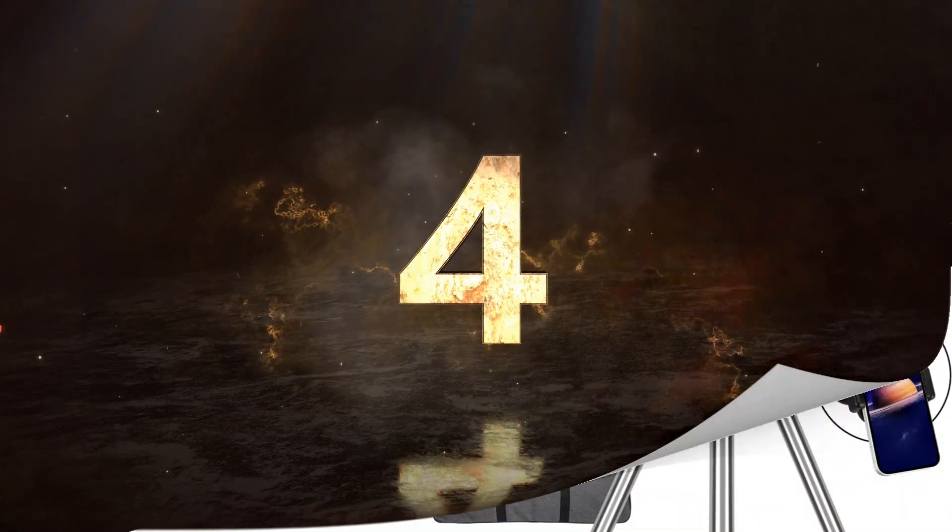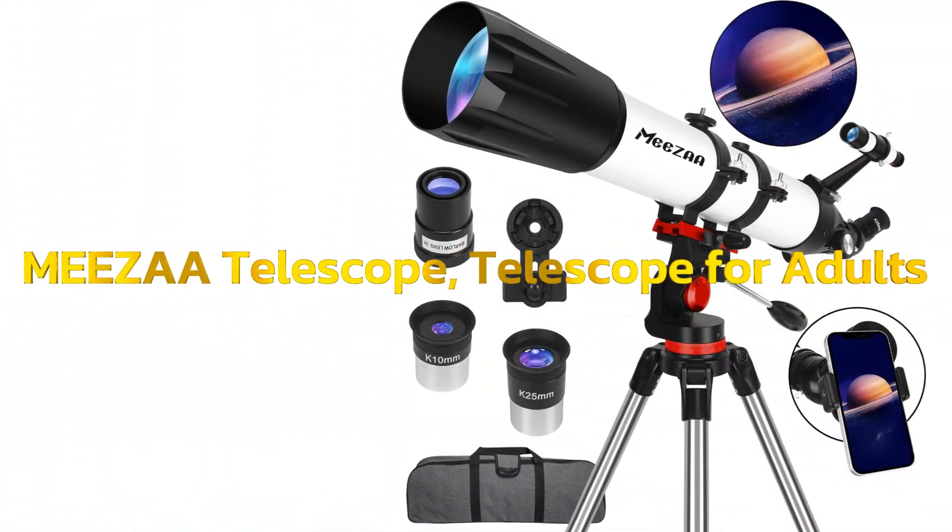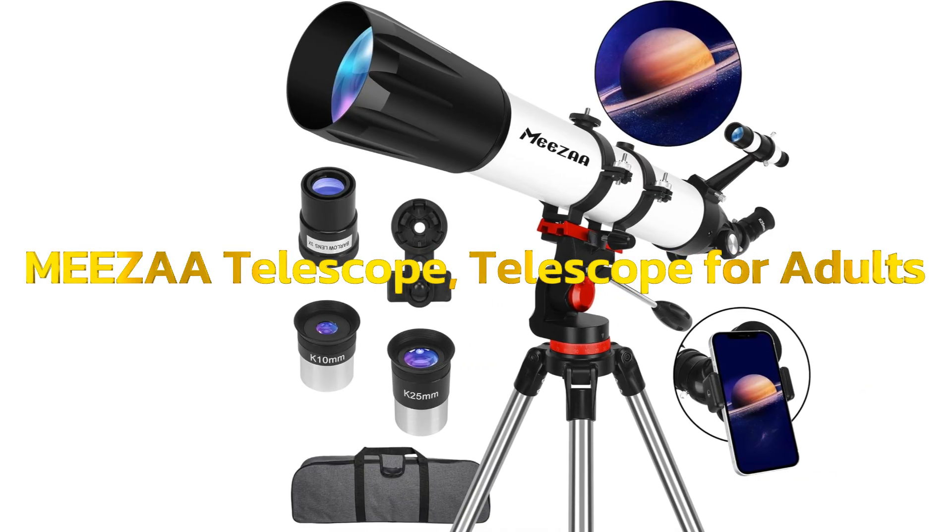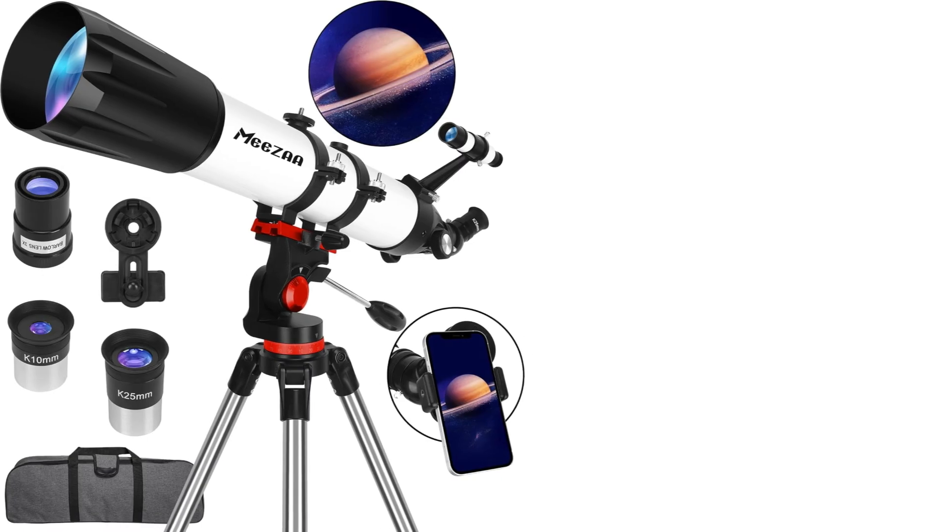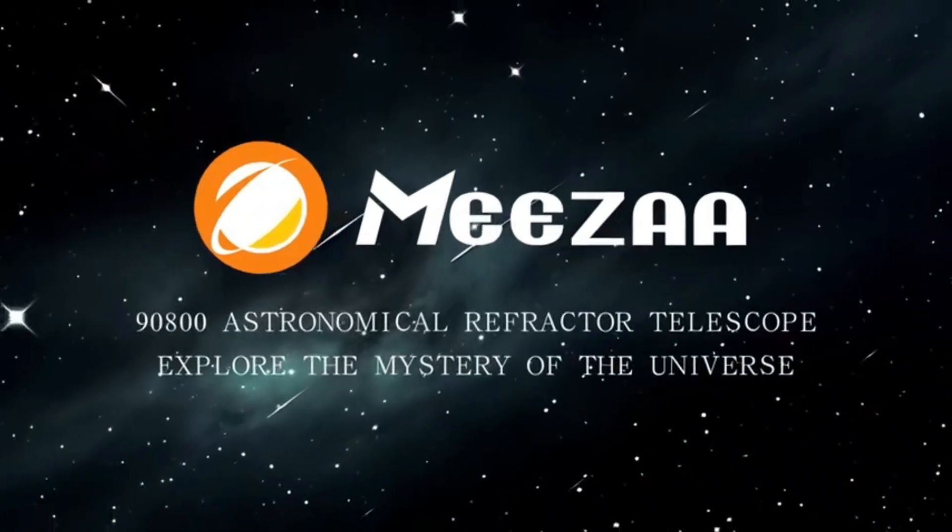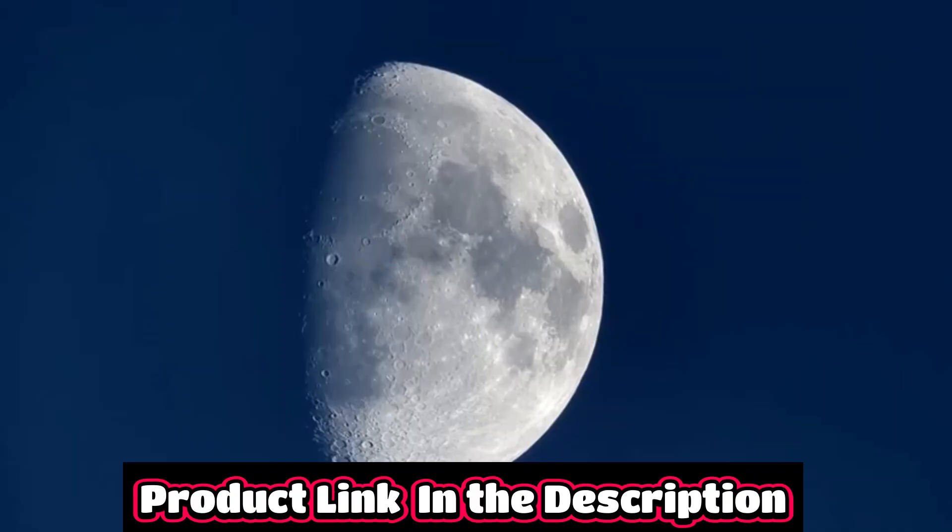Number 4. Misa Telescope, Telescope for Adults High Powered Professional, 90mm Aperture 800mm Refractor Telescopes for Astronomy Beginners Fully Multi-coated with AZ-mount Tripod and Phone Adapter and Carry Bag.